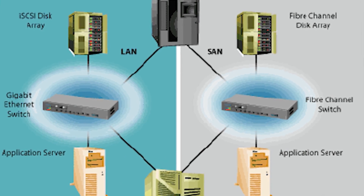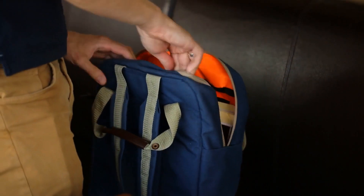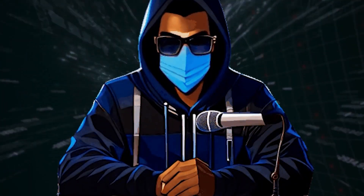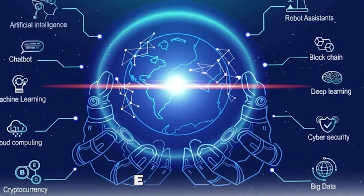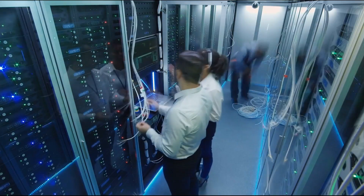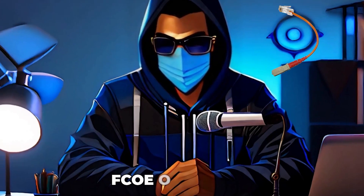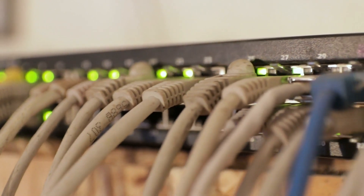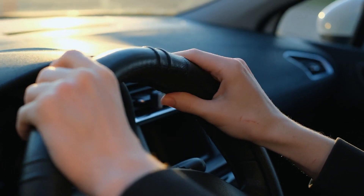iSCSI allows you to treat remote storage as if it's local — like having a magic bag that connects directly to a warehouse miles away. It's fantastic for storage area networks, but intercepting this connection could give attackers access to your data warehouse. Fiber Channel is like the bullet train of storage networks — fast and efficient, used in data centers for high-speed data transfer, but physical access to the network can spell disaster if not secured. FCoE, or Fibre Channel over Ethernet, combines the speed of Fiber Channel with the flexibility of Ethernet.